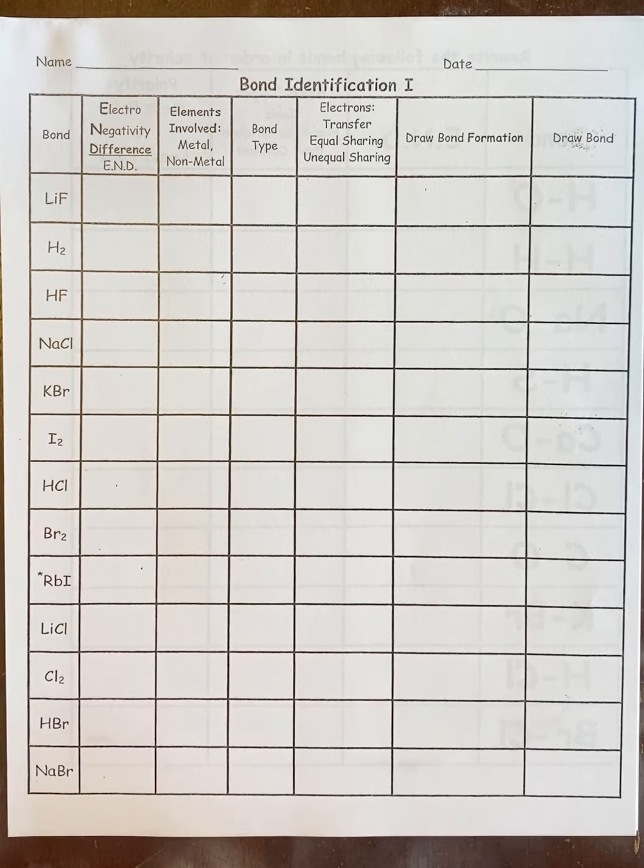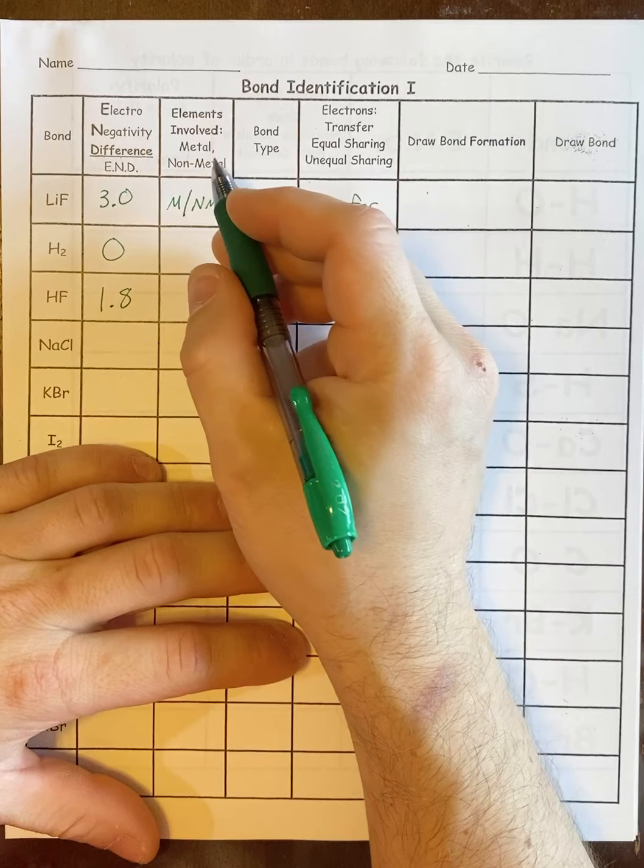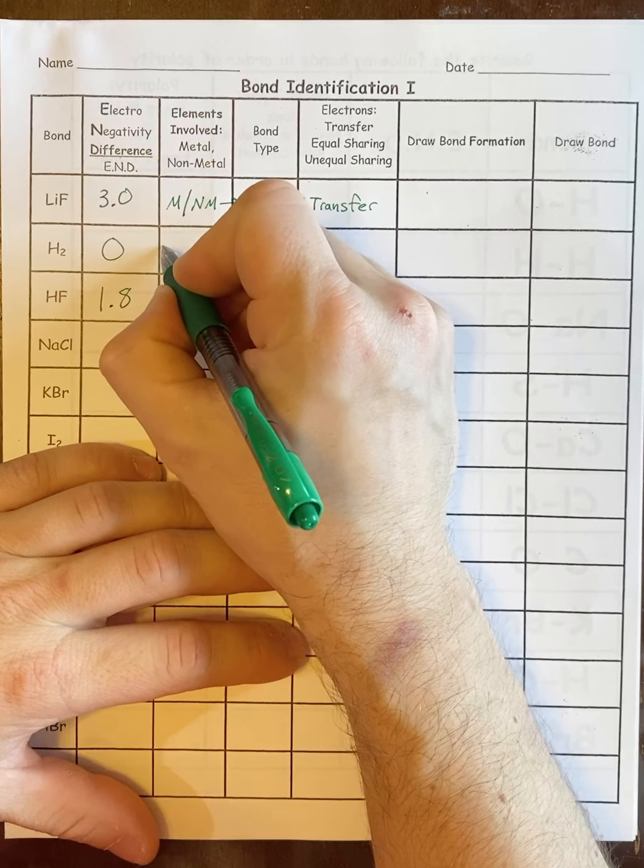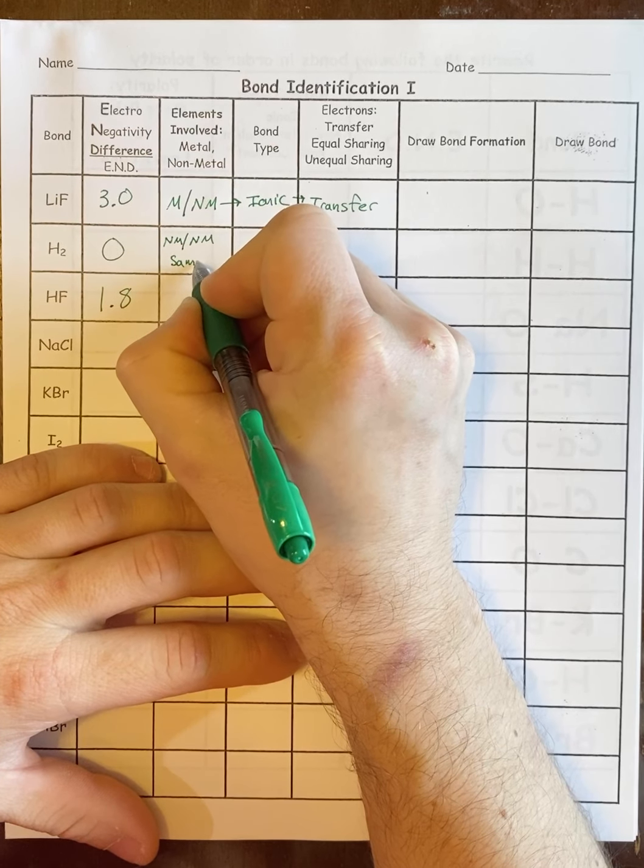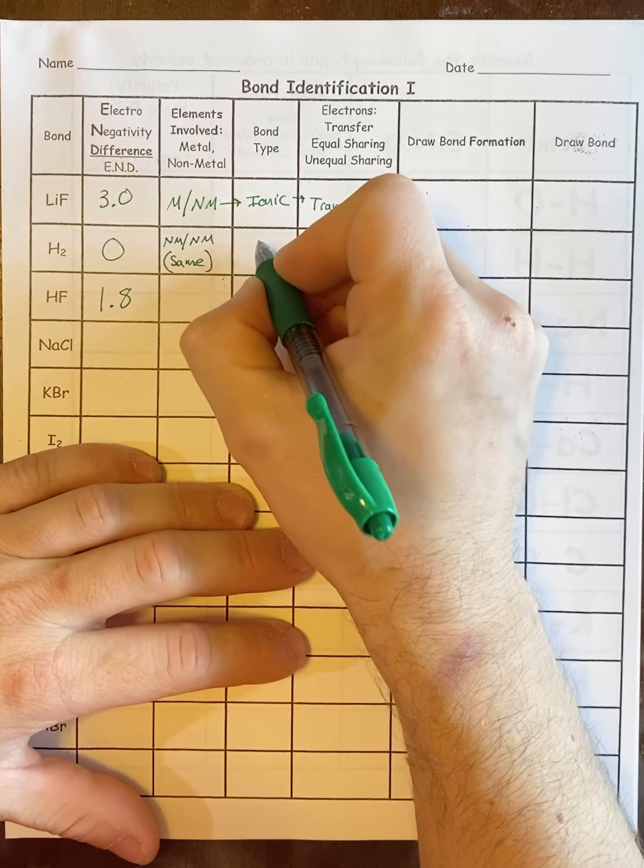So the way you do that, you look it up. Li and F—we have a metal with a nonmetal. Now, once I know that, I know my bond type. That actually tells me my bond type is ionic. My EN difference would tell me that too, but it's probably a safer bet to do it off elements. It's also faster. And all ionic compounds transfer their electrons.